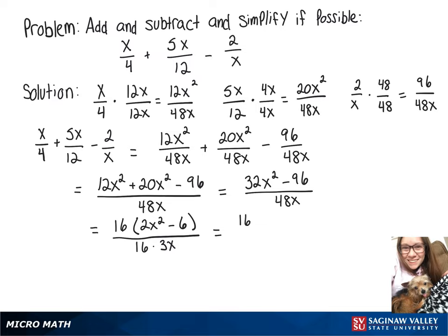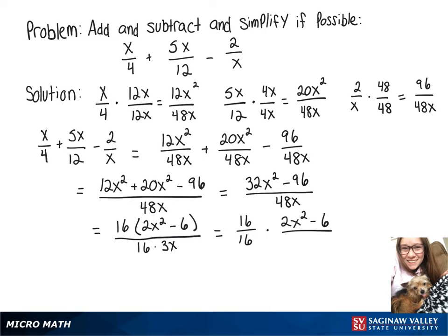Now we can rewrite that as 16 over 16 times 2x squared minus 6 over 3x. And since 16 over 16 is just 1, that goes away, leaving us with 2x squared minus 6 over 3x.